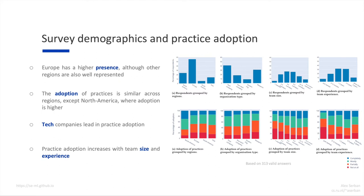The participants could be assigned to 4 groups, corresponding to their region or continent, the organization type they are part of, their team size, and their team experience. The top plots on the right show the distribution of participants based on these groups. We observed that when grouped by regions, Europe has a higher presence than other continents, though the others are also well represented. When grouped by organization type, tech companies and research labs have a higher presence than non-tech companies and governmental organizations, which is expected since tech companies and research labs lead in adoption of machine learning technologies. The last two plots show respondents grouped by team size and team experience, which follow an approximately normal distribution.